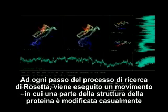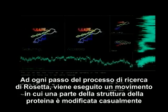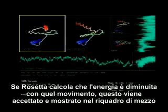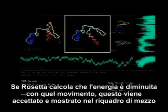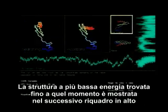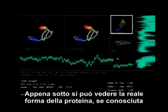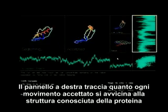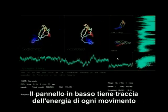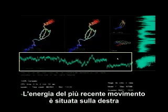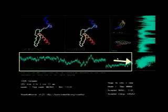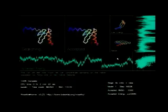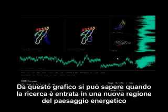In each step of the Rosetta search process, a move is made in which part of the protein structure is randomly altered. The top left panel of the screensaver shows each move as it is being made. If Rosetta calculates that the energy has decreased with the move, it is accepted and displayed in the middle panel. The lowest energy structure found so far is displayed in the next panel over. Shown below this is the actual shape of the protein, if it is known. The panel to the right tracks how closely each accepted move compares to the known protein structure. The bottom panel tracks the energy of each move, with the energy after the most recent move located on the right. The bottom right corner has a graph which plots energy versus how close the shape is to the actual protein, so you can tell when your search has entered a new region of the energy landscape.